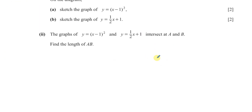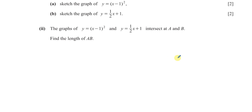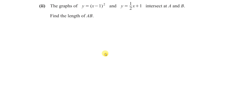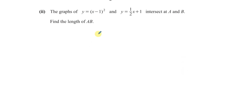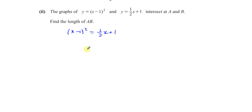Part 2 says: the graphs of these two intersect at points A and B — find the length of AB. This is worth 7 marks. Where two functions intersect is found by solving them simultaneously. So we substitute: x minus 1 squared equals one half x plus 1. The solutions of this equation will be the x-coordinates where they intersect. I need to expand the bracket to solve this equation.